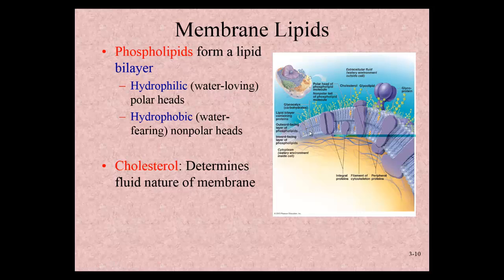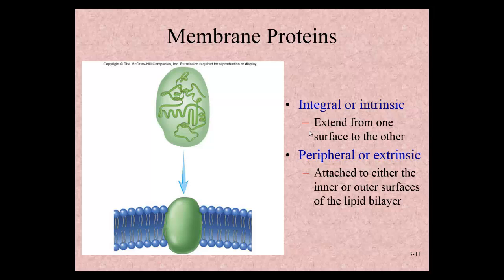Looking at proteins, these different proteins actually determine the function of the membrane. Some proteins extend from one side to the other and are embedded in the membrane, while others may be on just one side depending on whether they act as enzymes. Either way, these are long chains of amino acids linked by peptide bonds. Peripheral proteins are not embedded in the membrane — they're more loosely attached and might help link different cells together or act as enzymes.